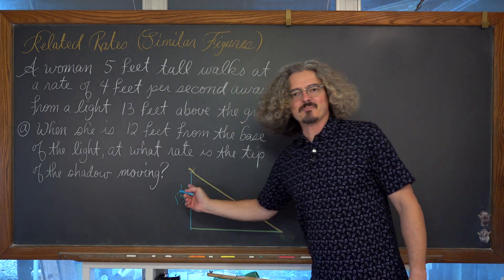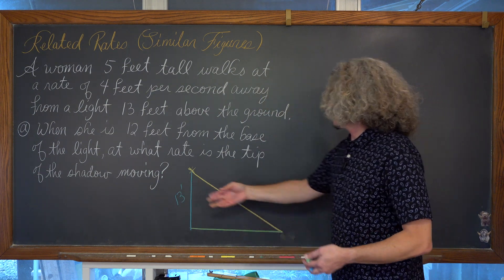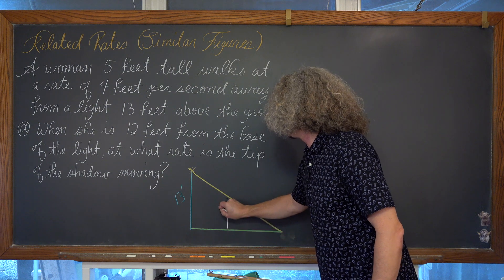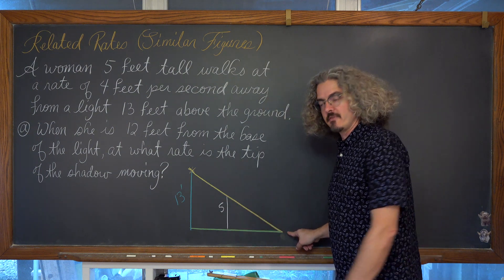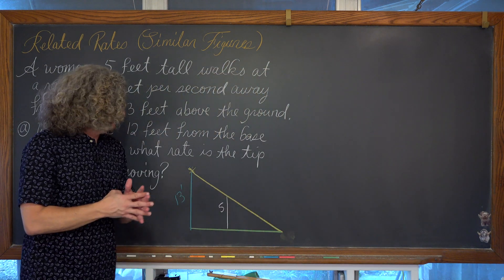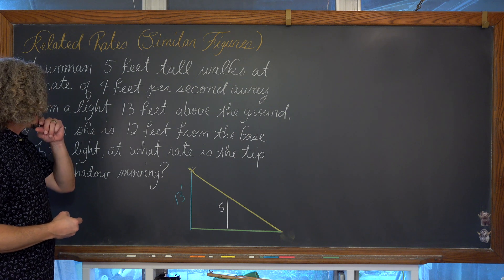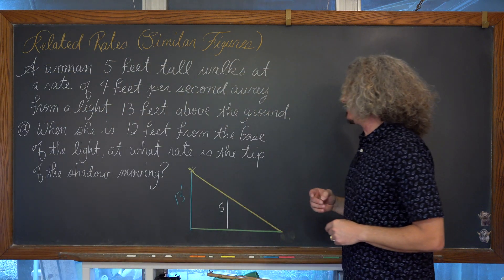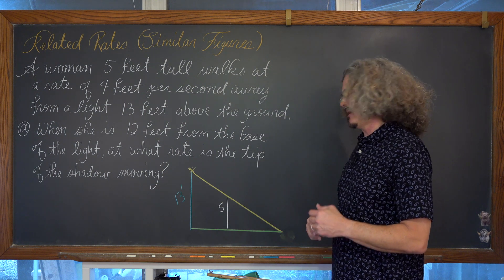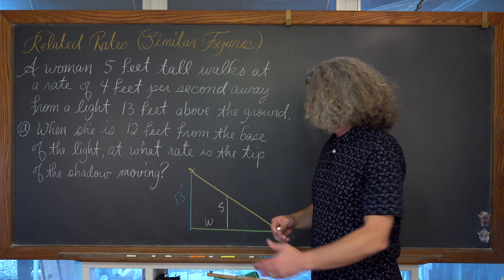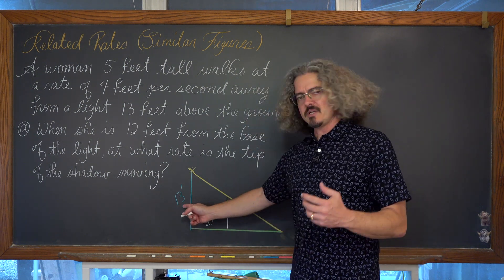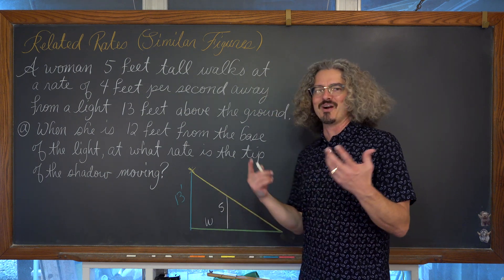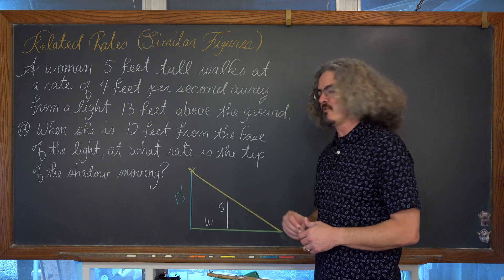In calculus, a dash mark might look like a prime symbol or a derivative, but of course we're not going to take the derivative of a constant. We have this young lady here, 5 feet tall, walking away from the light, and her shadow with the tip of the shadow down here on the ground. The 13 and the 5 are values that won't change within the problem, but the distance she is away from the light certainly will.